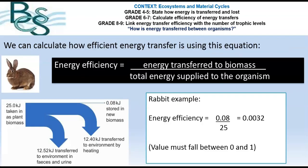So we can work out the efficiency now — the energy efficiency — similar to as you would do in physics. On the top of our equation we've got the energy transferred to biomass. So in our rabbit example we had 0.08 kilojoules stored as new biomass as the rabbit. And we divide that by the total energy supplied to the organism — so that's the total energy taken in by the rabbit as grass, which is 25. So we have 0.08 divided by 25, which gives us a value of 0.0032. We could turn that into a percentage by multiplying it by 100.